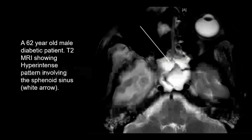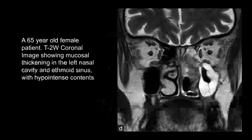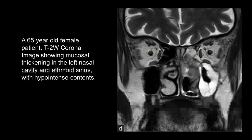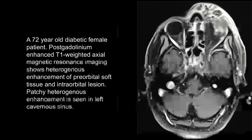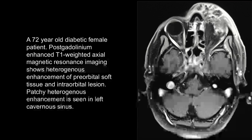In this T2-weighted MR image, a hyperintense pattern of the sphenoid sinus is seen. In this T2-weighted coronal image, mucosal thickening in the left nasal cavity and ethmoid sinus with hypointense contents is noted. In this post-contrast T1-weighted MR image, there is heterogeneous enhancement of pre-orbital soft tissue and an intraorbital lesion, as well as patchy heterogeneous enhancement in the left cavernous sinus.